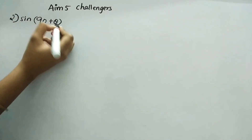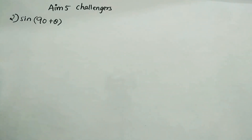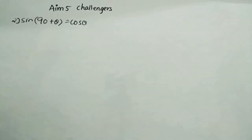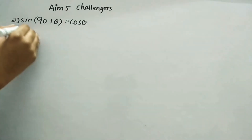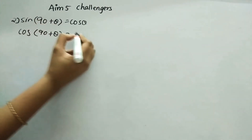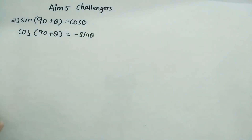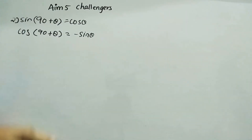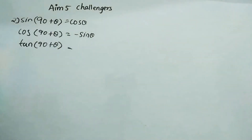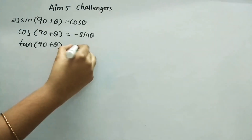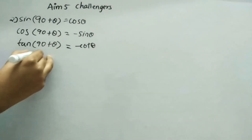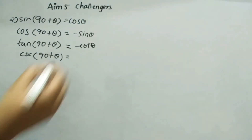First, sin(90+θ) — that is nothing but cos θ. And cos(90+θ) — that will be nothing but minus sin θ. For every ratio it will be different, minus or plus, according to the ASTC rule. Now tan(90+θ) is minus cot θ, and cosec(90+θ) is sec θ.